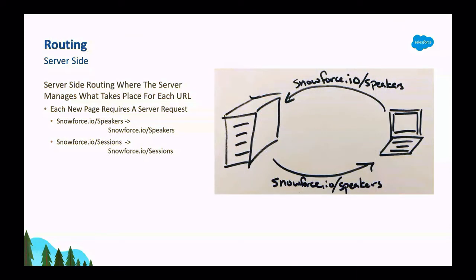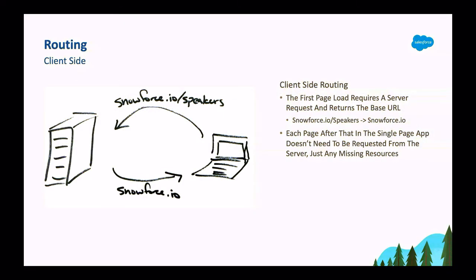I want to differentiate a couple of things. Most of the time when we're building on Salesforce, we're using server-side routing, where when I request a page like snowforce.io/speakers, the server returns all files necessary for that page. With client-side routing, which is where we're heading, we use more logic on the front-end. If you request snowforce.io/speakers, the server actually responds with just snowforce.io and what it takes to make the web page. Then it's up to my JavaScript logic to determine what needs to go on the page. All my logic is contained on the client-side — that's one of the core fundamentals of a single-page application.